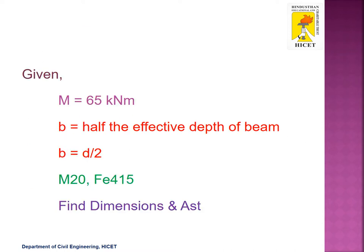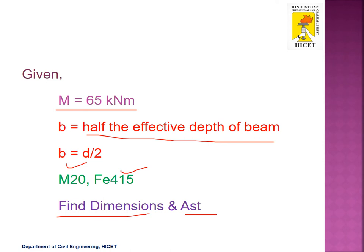So these are the given data. The moment value is 65 kNm. The breadth of the beam B is half the effective depth d, so B is equal to d divided by 2. The given grade of concrete is M20 and grade of steel is Fe415. We need to find the dimensions and the area of tension reinforcement.